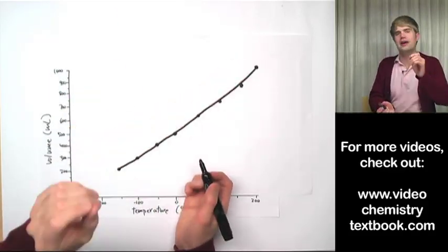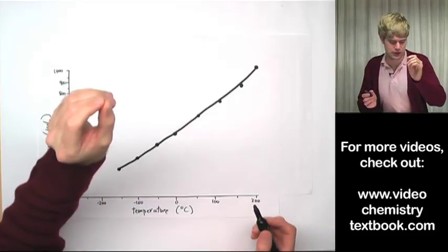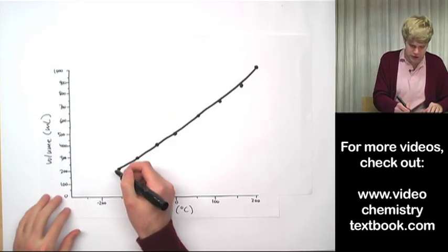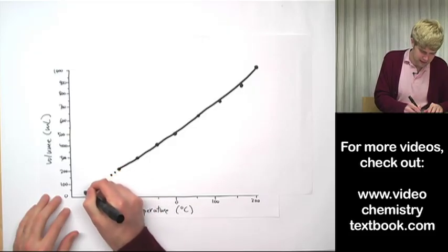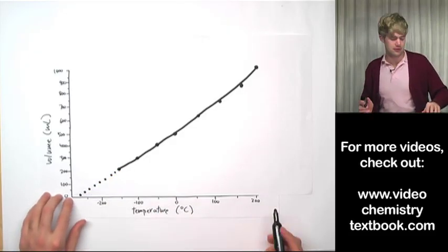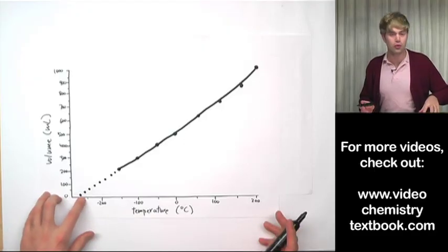based on the straight line I can make a pretty good guess of where it's going to head. And it's just going to follow this straight line right down here. And it's going to hit zero for volume right around this point.